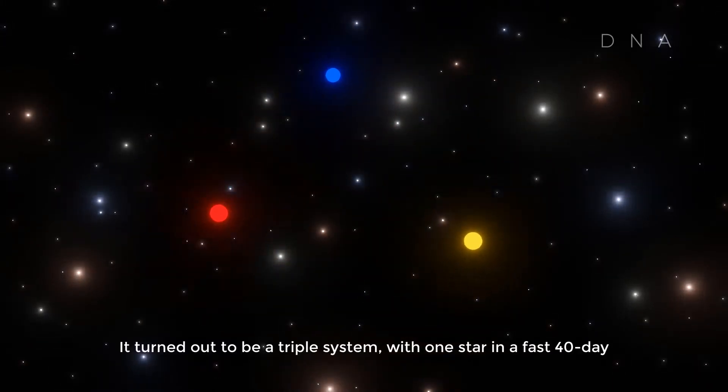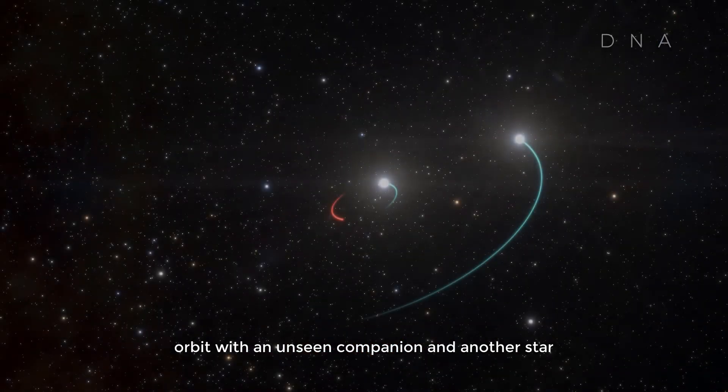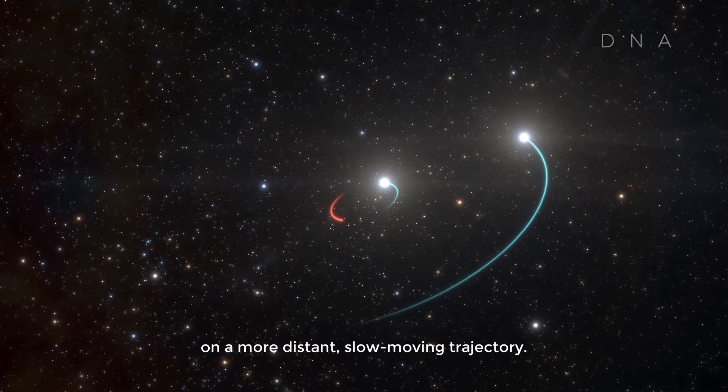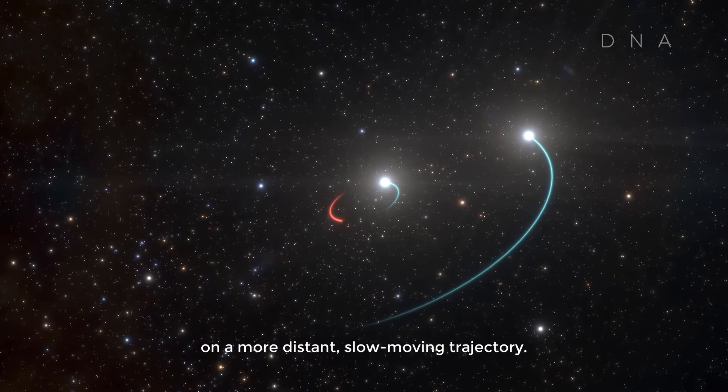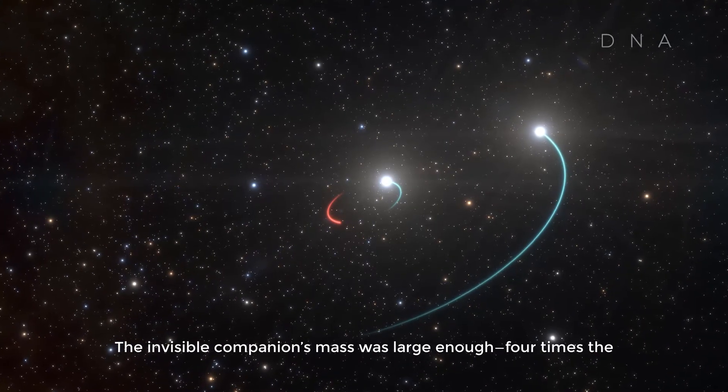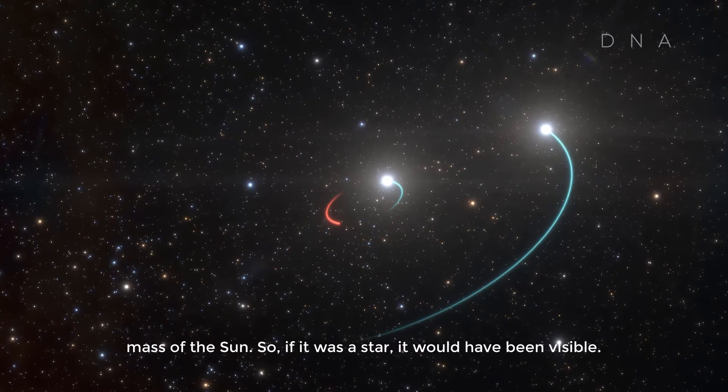It turned out to be a triple system with one star in a fast 40-day orbit with an unseen companion and another star on a more distant slow-moving trajectory. The invisible companion's mass was large enough, four times the mass of the Sun, so if it was a star it would have been visible.